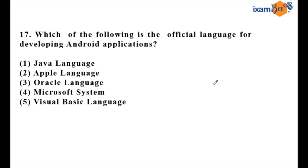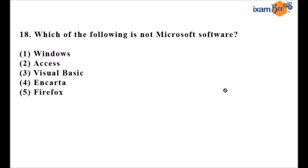Question seventeen asks: which of the following is the official language for developing Android applications? The correct answer is Java — Android applications are made using Java language. Question eighteen asks: which of the following is not Microsoft software? Windows, Access, Visual Basic, and Encarta are all Microsoft products. Firefox is by Mozilla, so the fifth option — Firefox — is the correct answer.